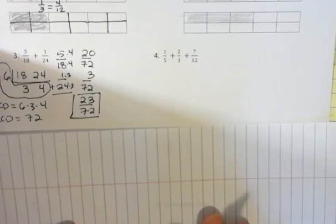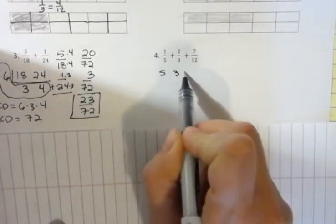Okay. The next one has 3 different denominators, so I have to find a number that all 3 of those go into. And so, I'm going to use my method: 5, 3, and 12.